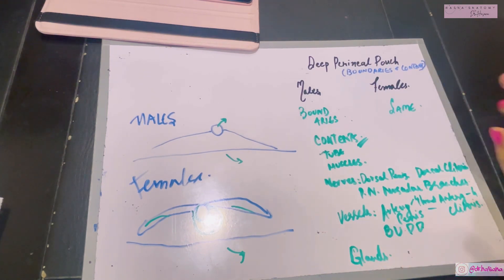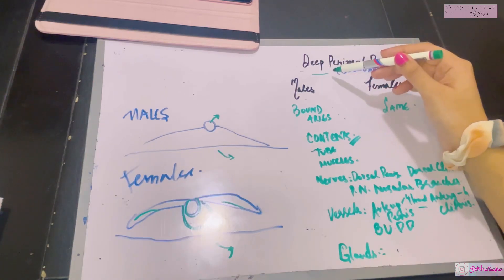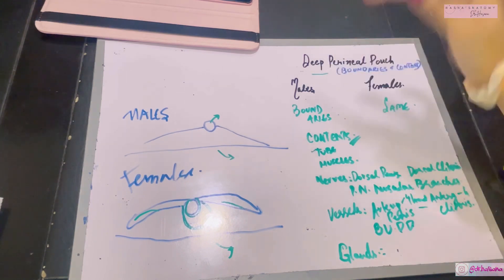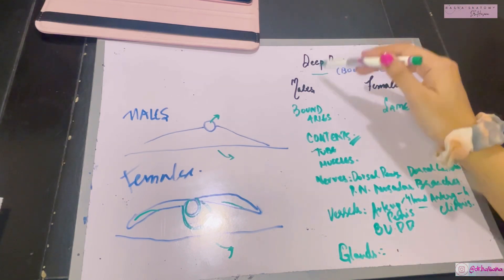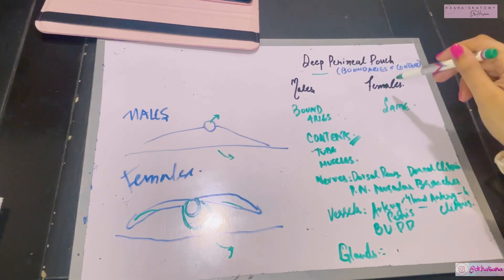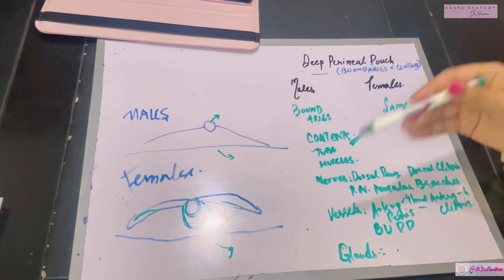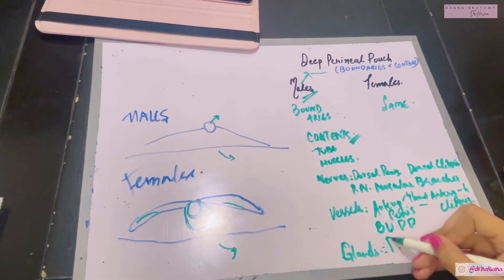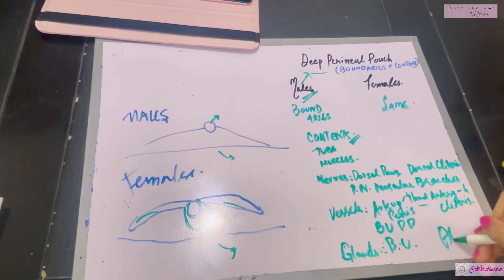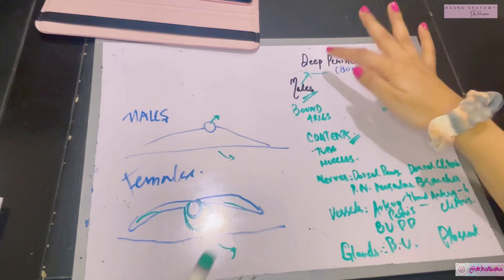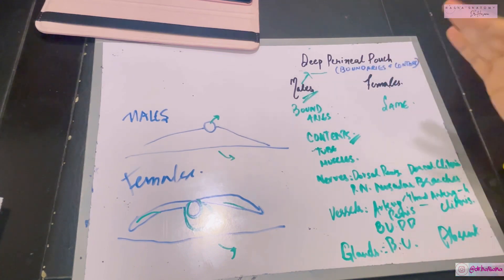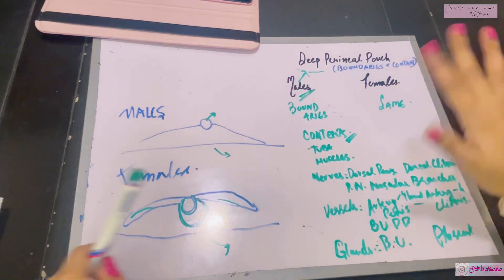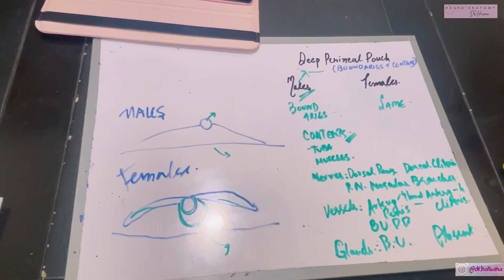Finally, the glands. One important difference between deep and superficial perineal pouch in males and females: in the deep perineal pouch you will see glands in males, whereas there are no glands in females. Switch it up for the superficial perineal pouch — males have no glands there, females have glands there. So both have kept their glands in different locations. In males, these are the bulbourethral glands — in females, these are absent. It's just like males keep their feelings buried deep inside, but females keep their feelings on their sleeves!